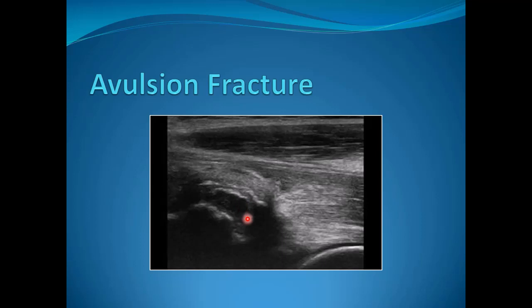Another example is the avulsion fracture. This is the anterior inferior iliac spine where the rectus femoris muscle is attached. We notice here an avulsed bony fragment with a regular bony outline.